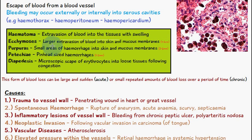One type of hemorrhage is called ecchymosis, which is a large extravasation of blood into the skin and mucous membranes — about one to two centimeters. We have a smaller one called purpura, which are small areas of hemorrhage into the skin and mucous membranes, a little smaller at three to five millimeters.